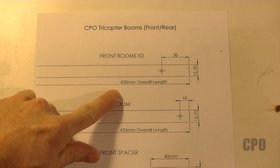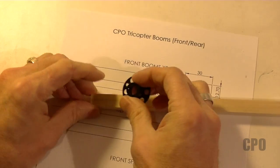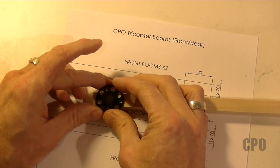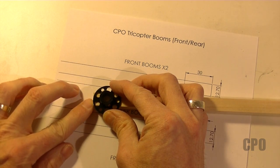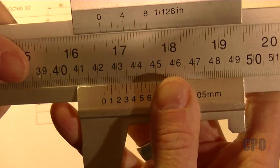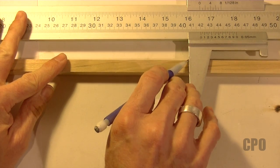Next I start working on the two front booms. These are 420 millimeter overall length, and because I don't have the yaw mechanism to deal with, I can just cut a straight 420 millimeter boom. Here's a peek at my gargantuan caliper that I use for measuring these booms. Set it for 420 millimeters, and then mark my cut line.